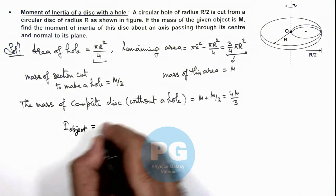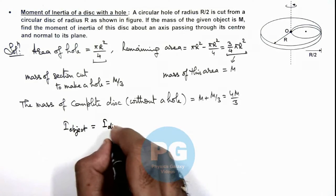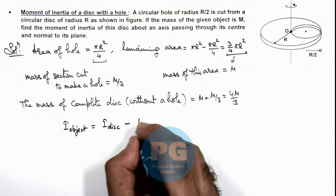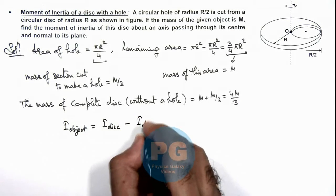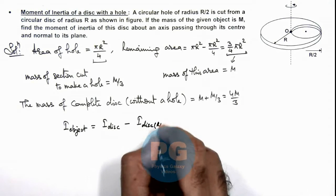We can write as: moment of inertia of complete disc minus moment of inertia of the disc of radius R/2.